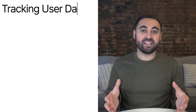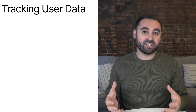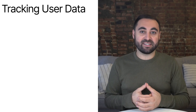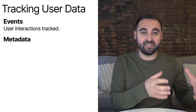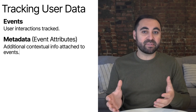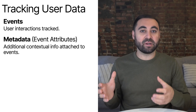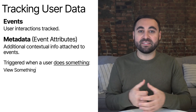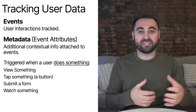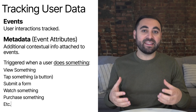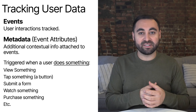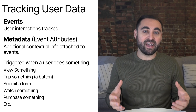Tracking data is the foundation for everything that follows, so it's important you understand how it actually works in the real world. There are really two parts: analytics events, and then metadata associated with each analytics event — sometimes called an event attribute. An event is triggered when a user does something in the product: they could view something, tap on something, submit a form, watch something, purchase something, etc. When anything happens, an event is tracked and sent to the analytics platform in the background.